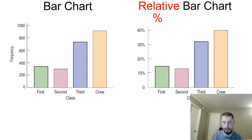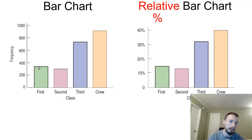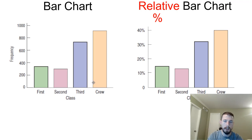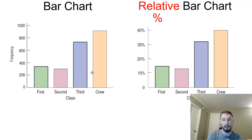Even better than a frequency table is a visual graph. Here we have a bar chart with frequency on the y-axis and class on the x-axis. One important thing about bar charts: there's space between each bar — it's not a histogram, because the categories are not related to each other. The order in which we put the bars doesn't actually matter because there's no distribution or relationship. But when bars are touching each other, that's called a histogram, which is something totally different — we'll get into that in a few days.